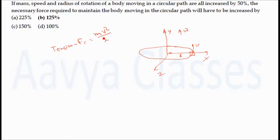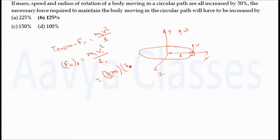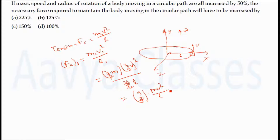If mass, speed, and radius are all increased by 50%, then M1 = (3/2)M, V1 = (3/2)V, and L1 = (3/2)L. The new centripetal force FC1 = M1·V1² / L1 = (3/2)M · (3/2)²V² / (3/2)L = (9/4)·M·V²/L = (9/4)·F. So the necessary centripetal force becomes 9/4 times the earlier centripetal force.